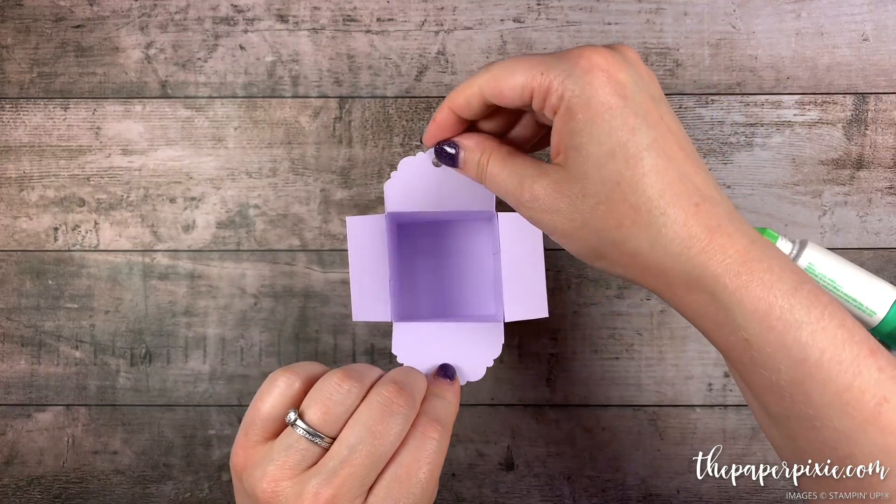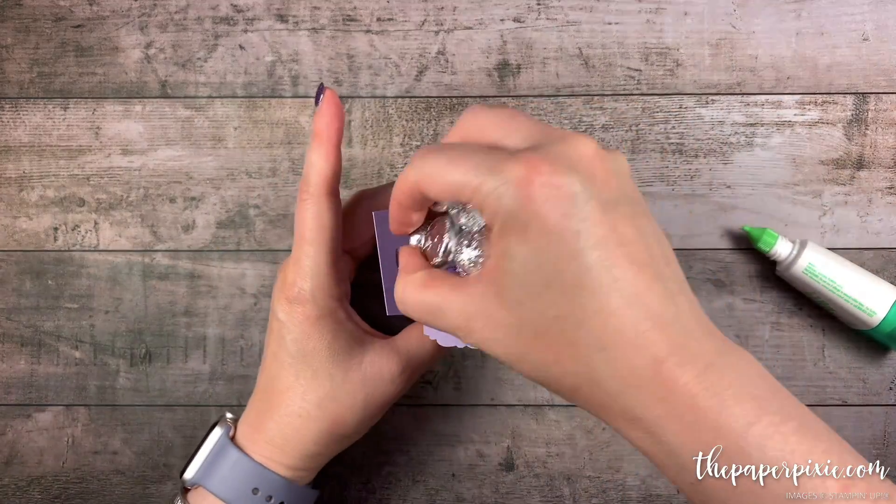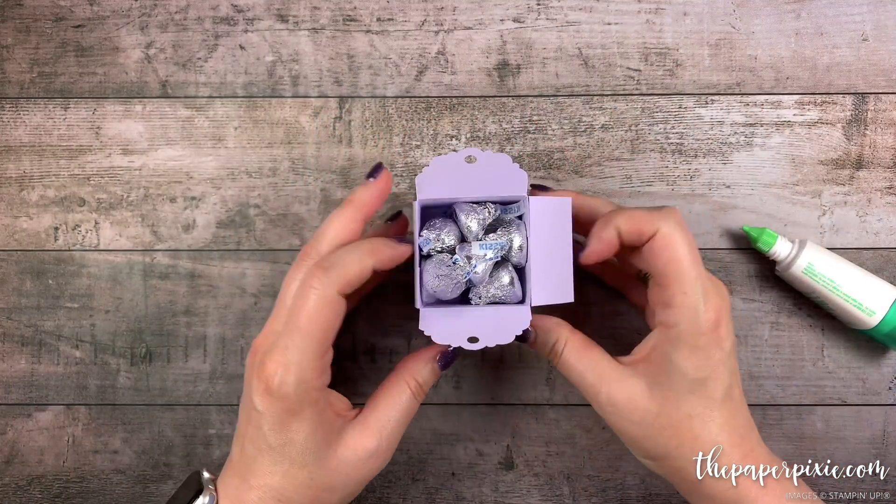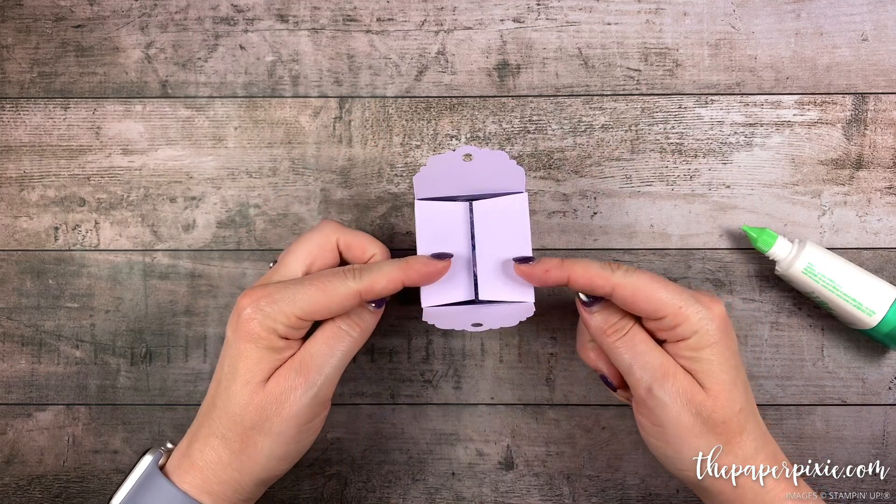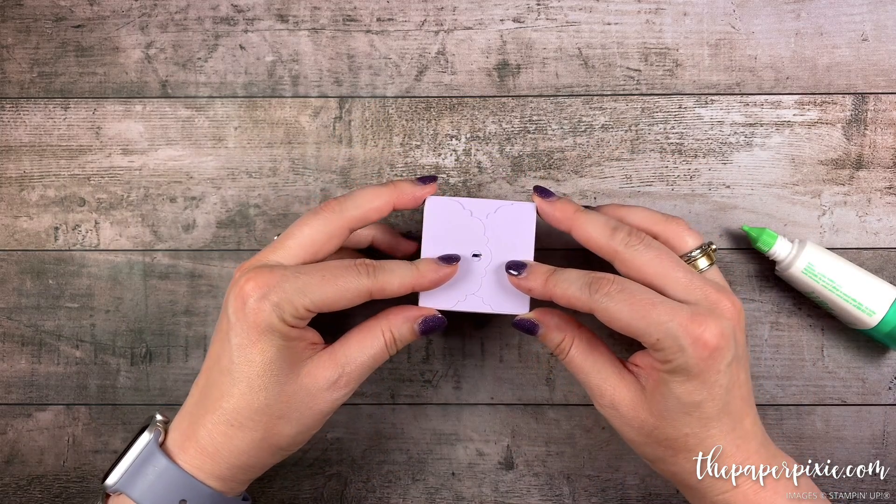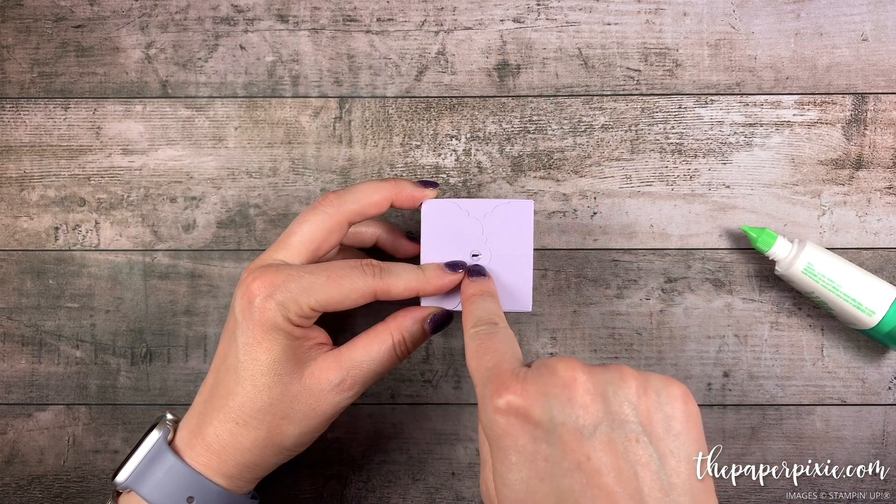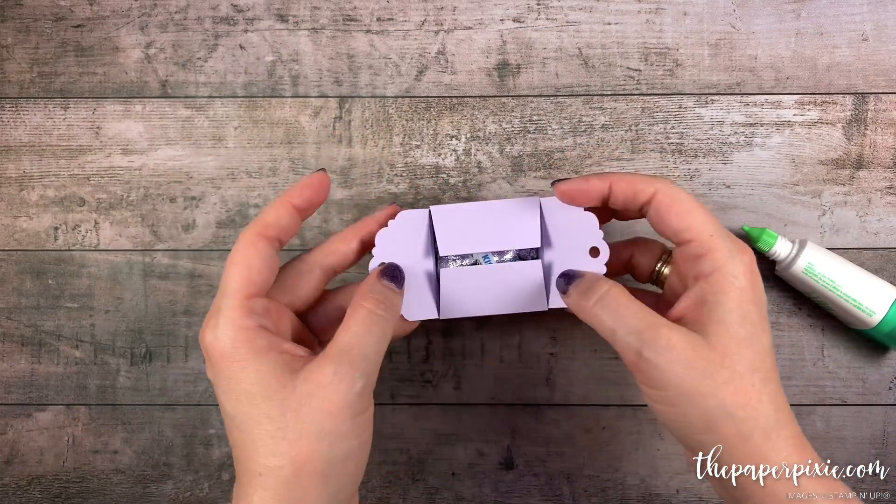Alright now there's our box ready to fill with treats. And I'll just grab a handful of Hershey's Kisses to throw in there. So we're going to fold in the tabs and then the lid's going to close like this. See how the holes line up on the delightful tag topper.